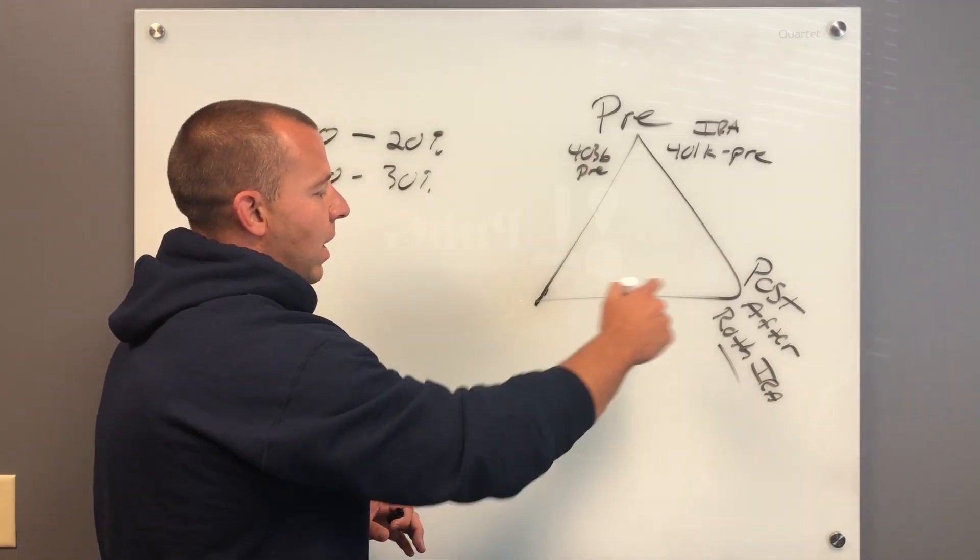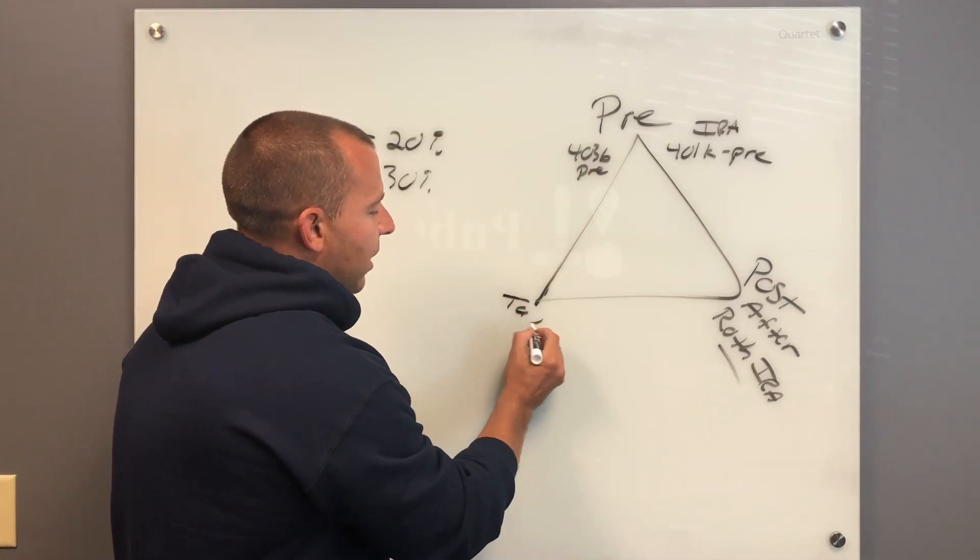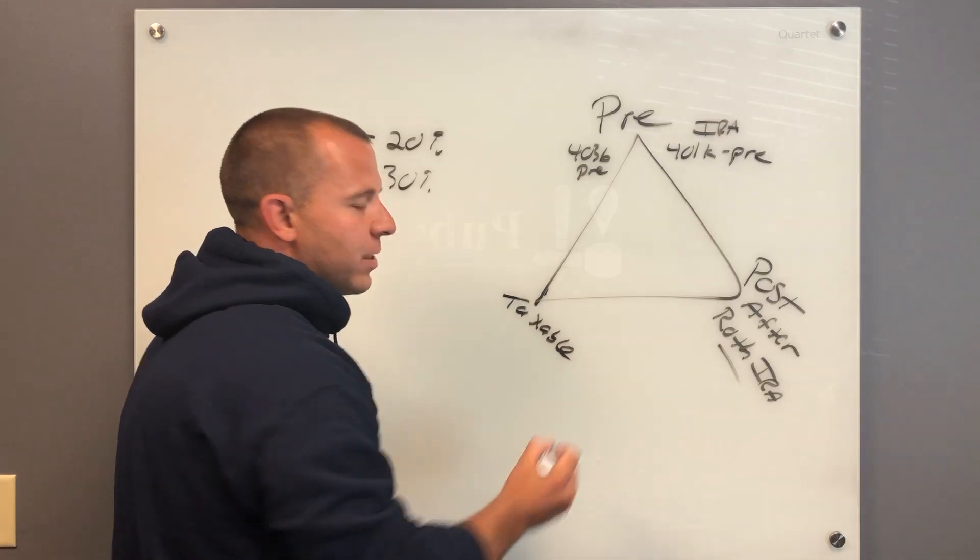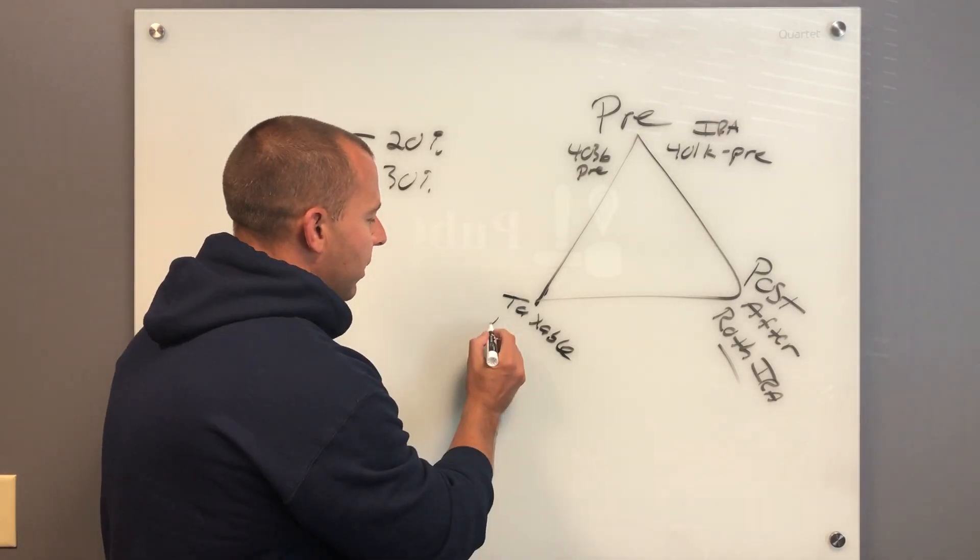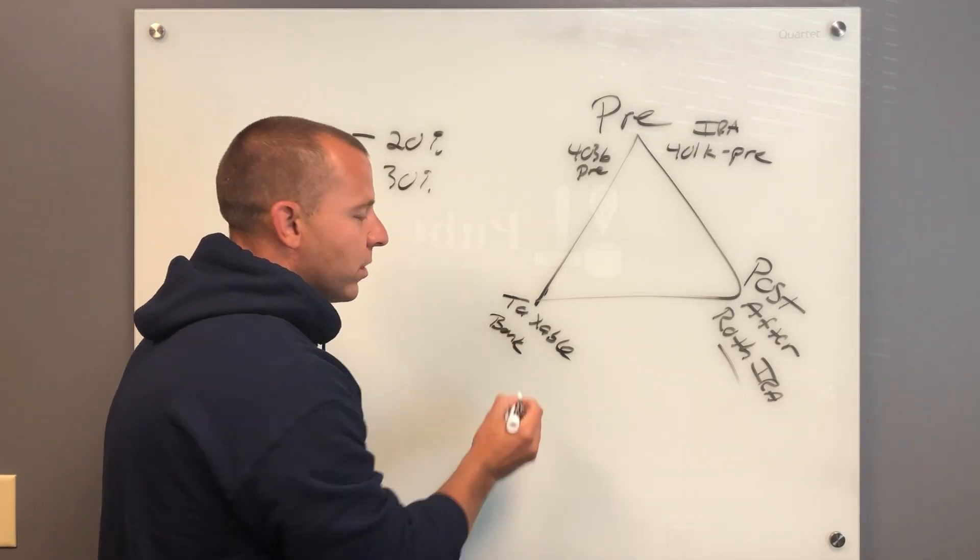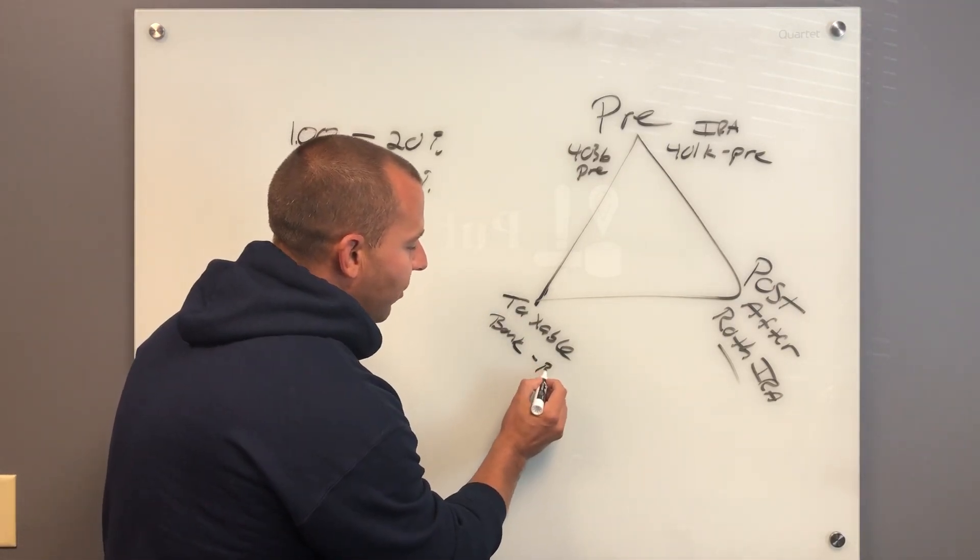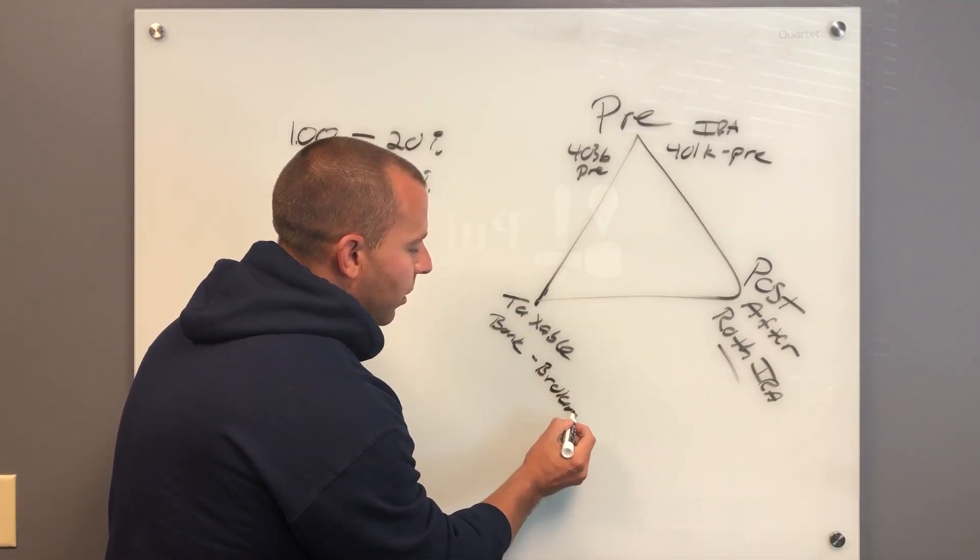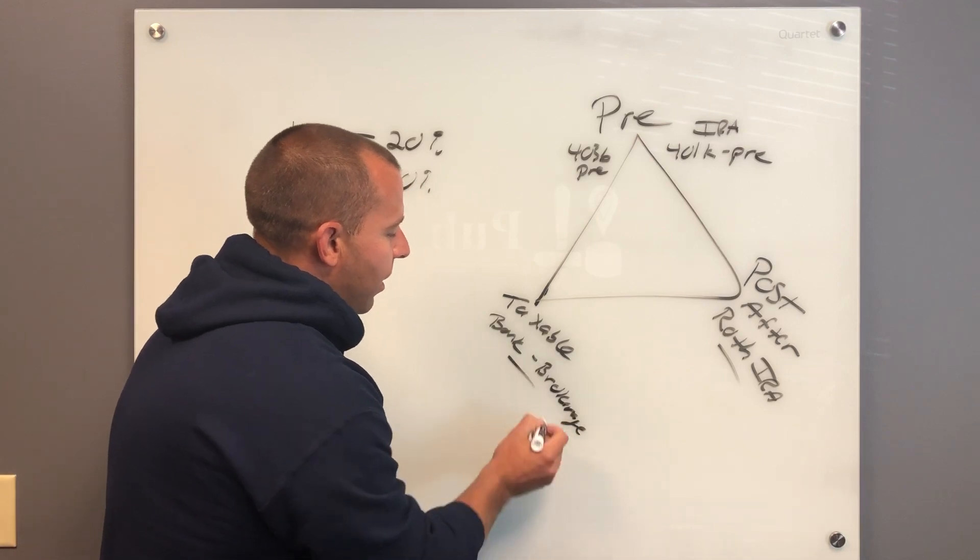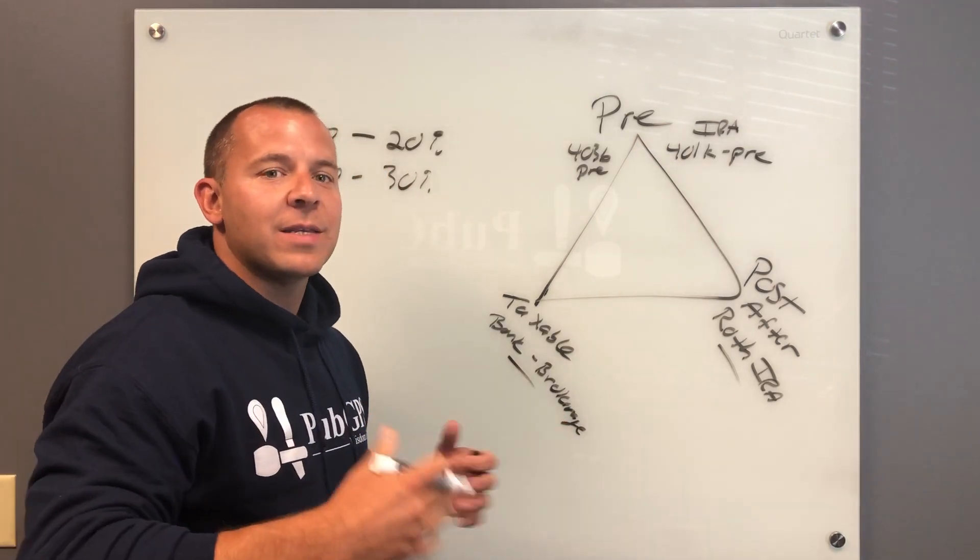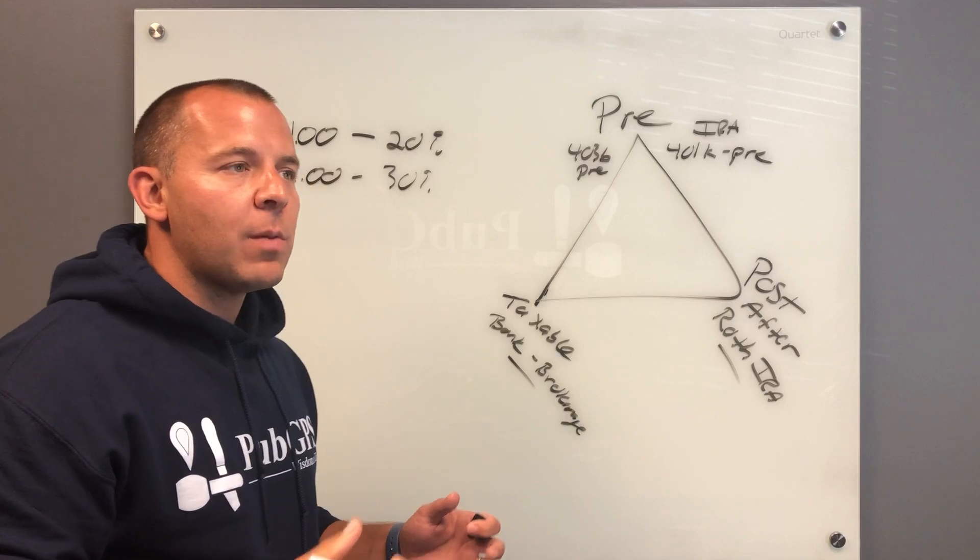And then the third piece of your triangle here is to save money that is just taxable. This could be money that you're putting in your bank or, as we've discussed, your online savings account. This could be just having a brokerage account with Charles Schwab or Fidelity where you own investments that you pay tax on each year.